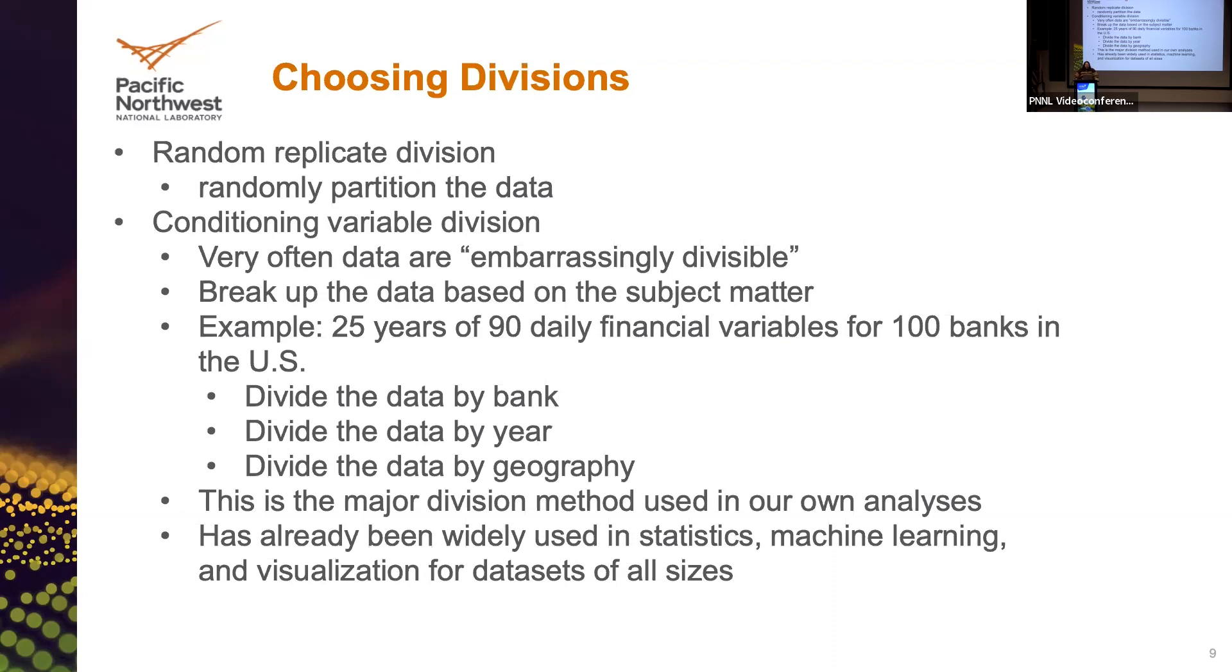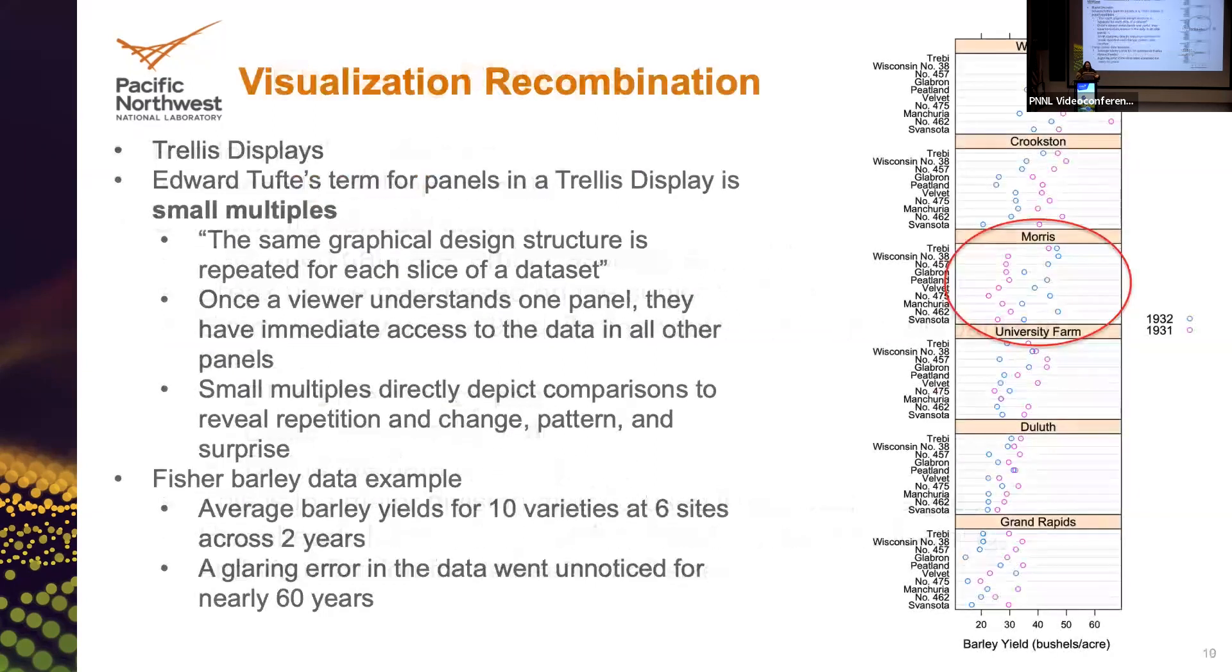So how do I choose a division? Well, if I'm a statistician and I have a large amount of data, I might just randomly partition my data into blocks. But if we think about just a very basic example, let's suppose you have data where you have 25 years of 90 daily financial variables for 100 banks in the US. Maybe we would break the data up by bank or by year or by some geographical variable. And in this case, the computations, models, and visualizations become embarrassingly divisible or parallelizable. In biology, we often have these really natural breaks in our data.